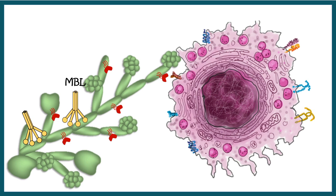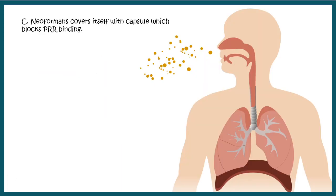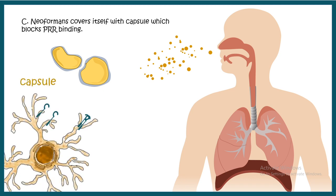Mannose-binding lectins can bind to polysaccharide-type antigens, leading to fixation of complement, and the complement-mediated damage ultimately kills the fungus. However, fungi also devise strategies to evade the immune system — for example, some fungi create a capsule around themselves, preventing dendritic cells from recognizing them and preventing complement proteins from settling on their surface, allowing these dangerous fungi to survive and infect humans.